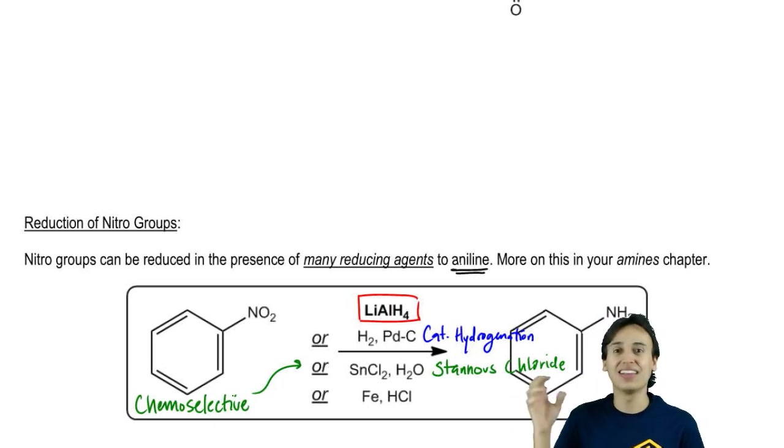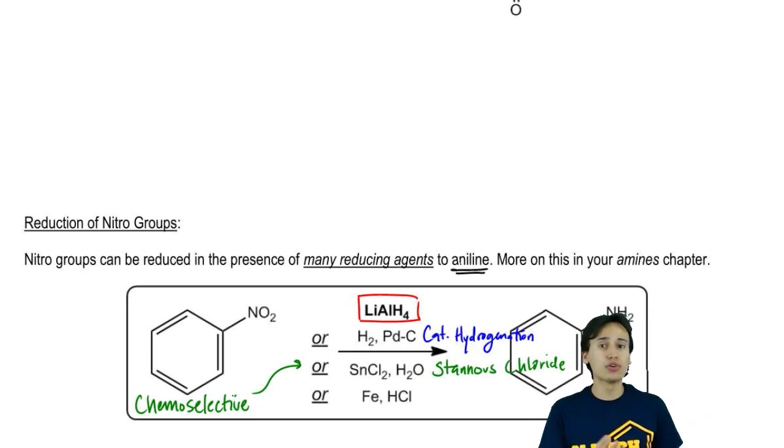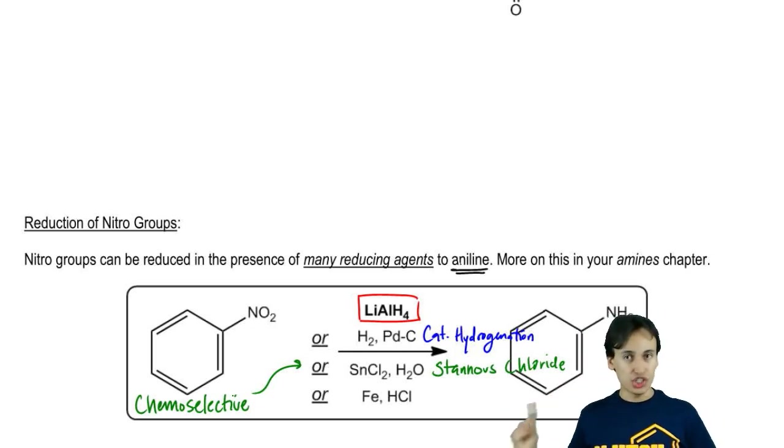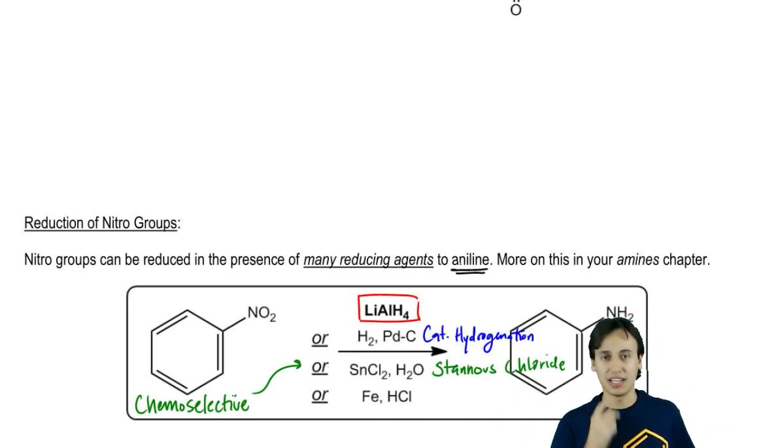It's talented at doing that and doesn't like to reduce many other types of groups. That's important when we have other groups vulnerable to reduction. Stannous chloride is a great choice because it hones in on the nitro groups and turns them into aniline.